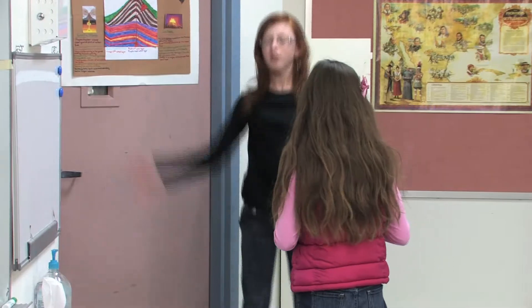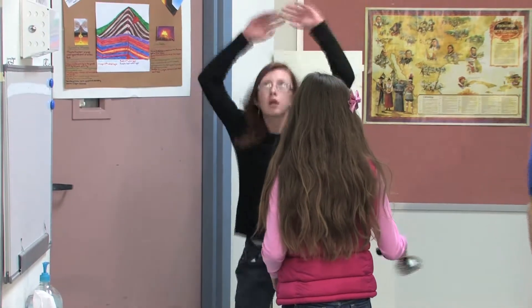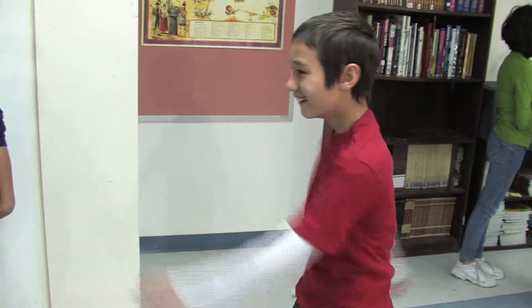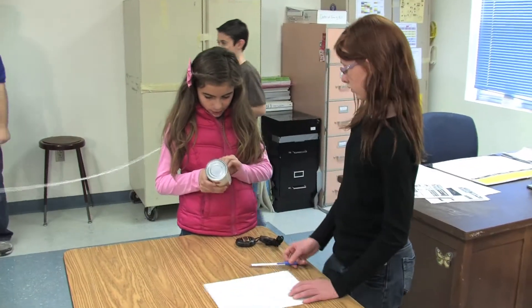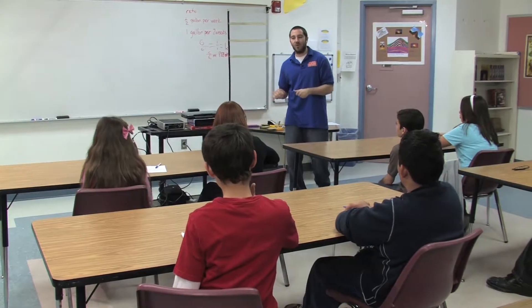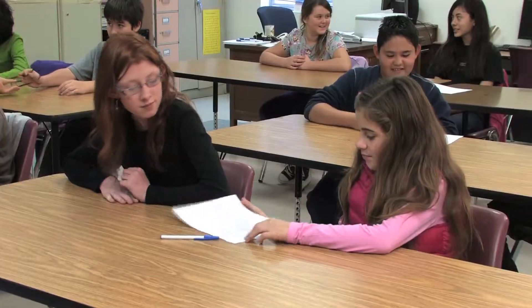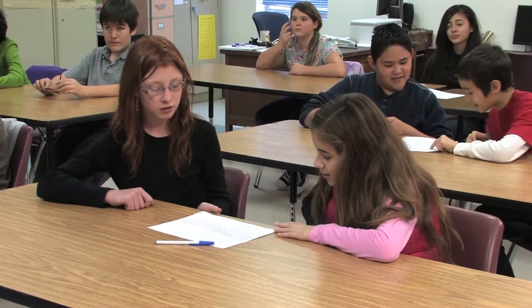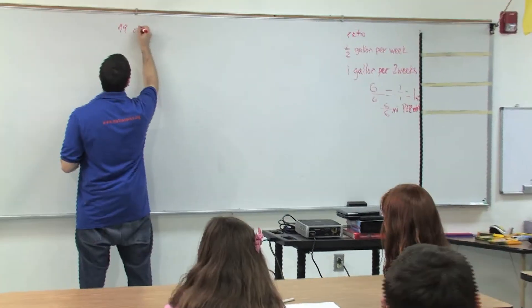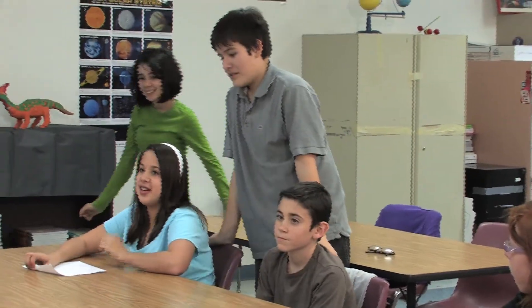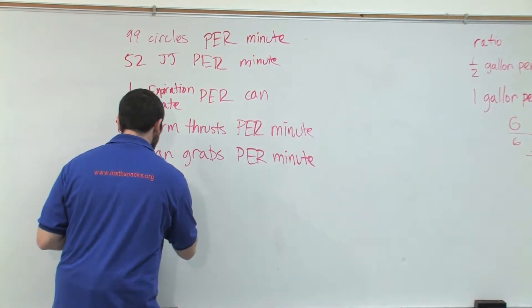What I want you guys to do is make as many rates as you can. So you guys have a bunch of rates in front of you. I'm going to call on each group and have you tell me your rates. Naomi and Sydney, go ahead. There were ninety-nine circles per minute. We had ten jumping jacks per ten seconds — jump ropes, ten seconds.